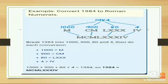1000 plus 900 plus 80 plus 4 equals to 1984. So 1984 is equal to MCMLXXXIV.